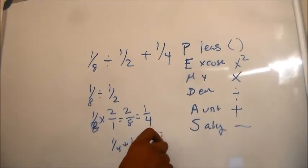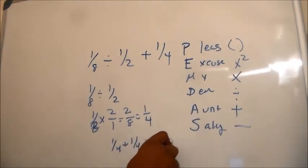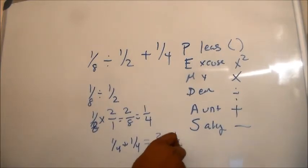It reduces to 1/2, so our answer would be D. This has been the AFOQT test prep, thanks for watching.